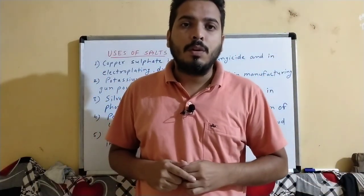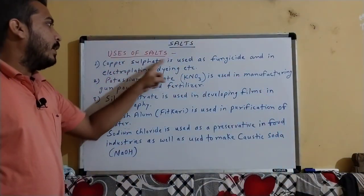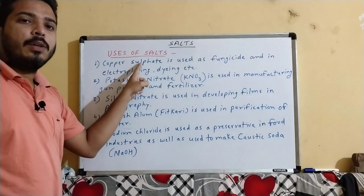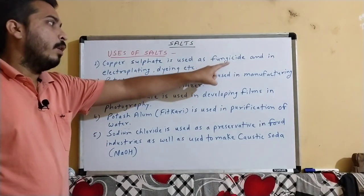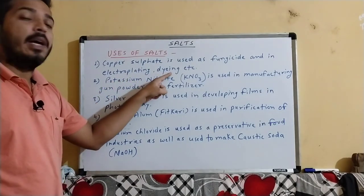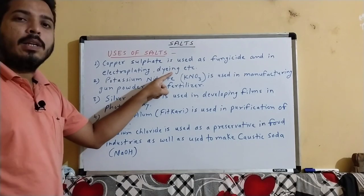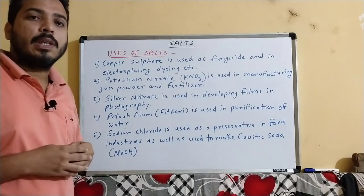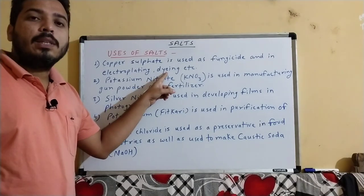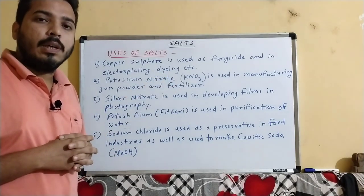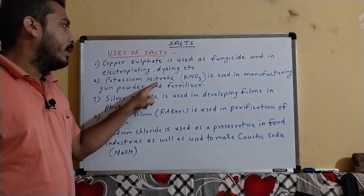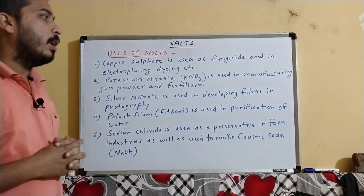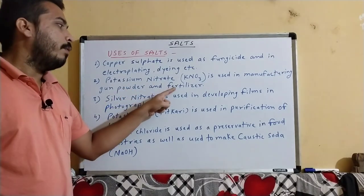Now we will discuss the uses of salts. Copper sulphate is used as a fungicide and in electroplating, dyeing, etc. It is generally used to destroy fungus and also used in electroplating and dyeing. Next, potassium nitrate (KNO3) is used in manufacturing gunpowder and fertilizers.